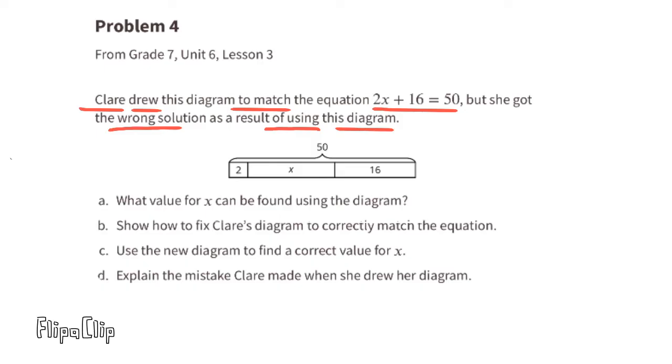Part a: What value for x can be found using the diagram? This diagram shows 2 + x + 16 = 50, and x must equal 32 to make this true, because 2 + 32 + 16 = 50.